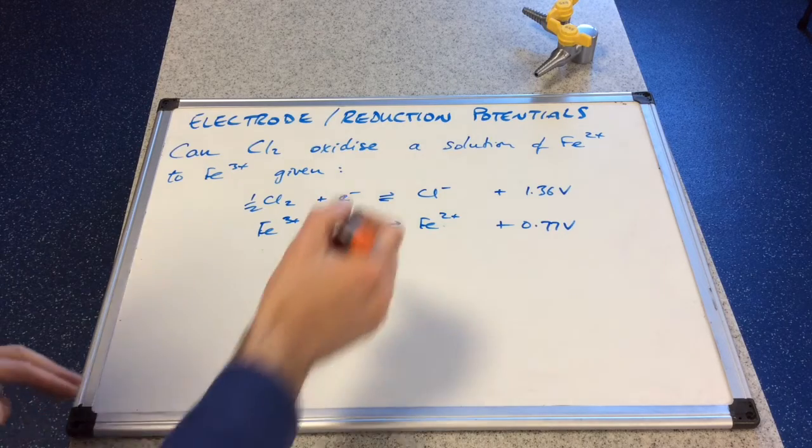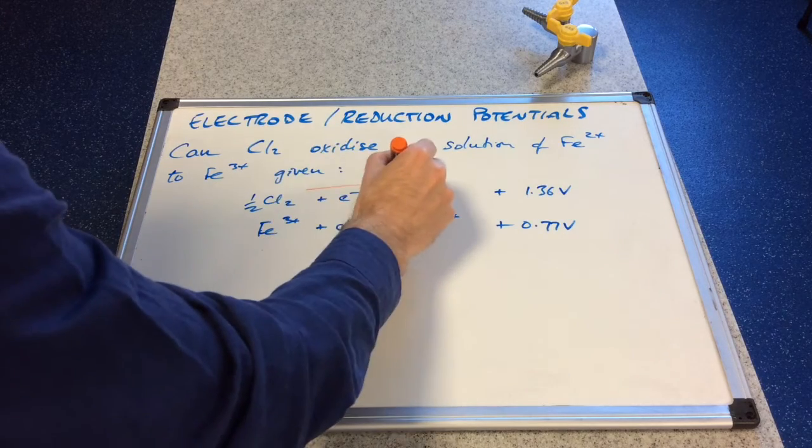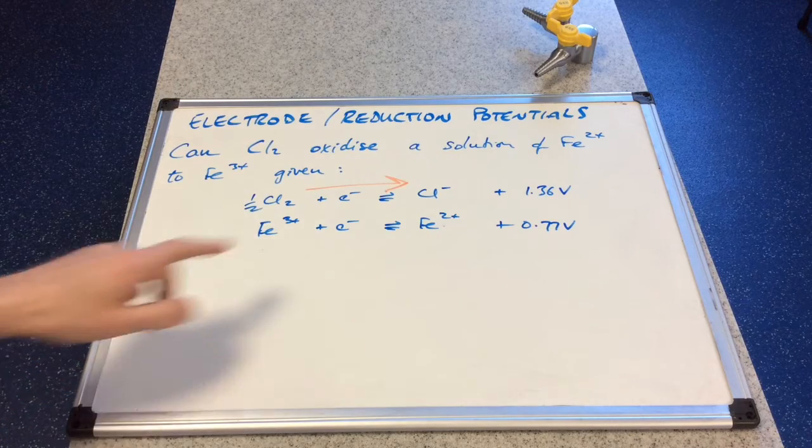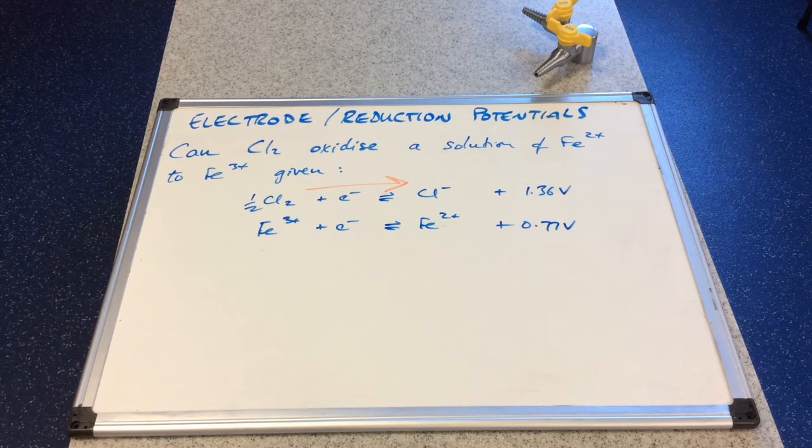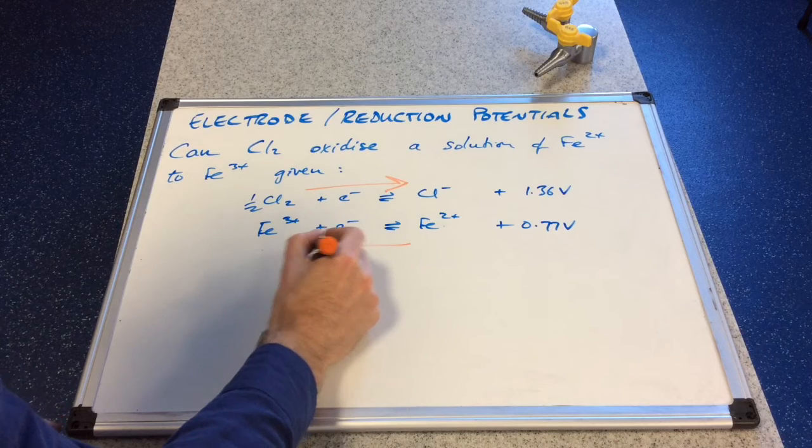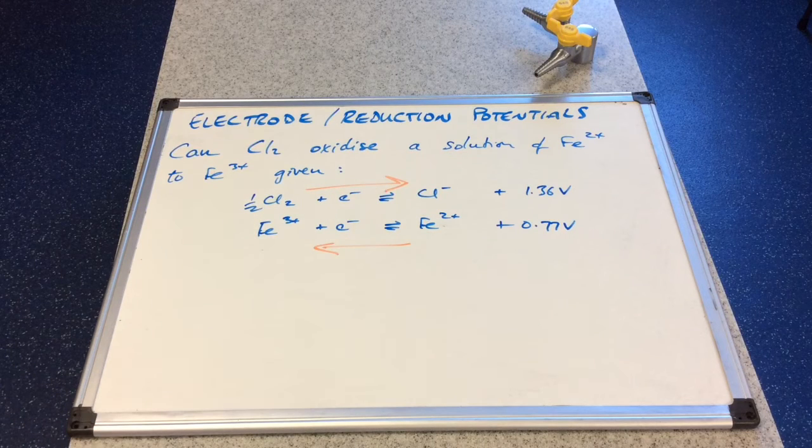So let's have a look. We've got this is the more positive one, plus 1.36. Obviously greater than plus 0.77. And so therefore this one has to go in reverse.